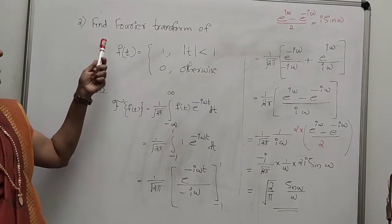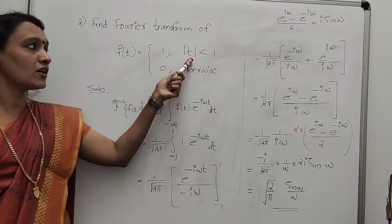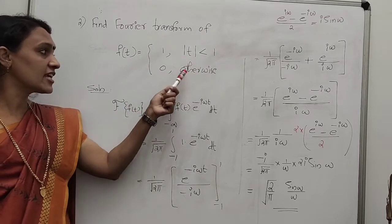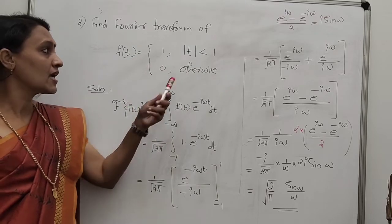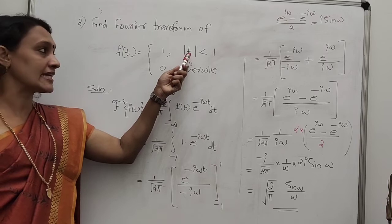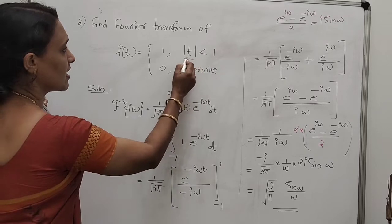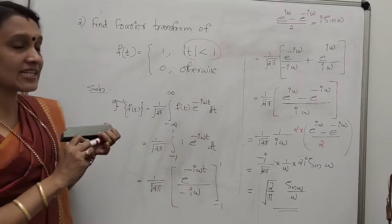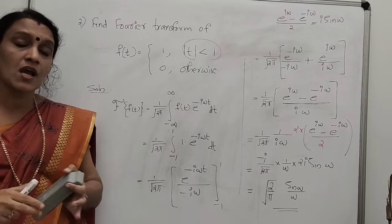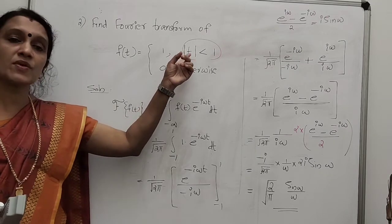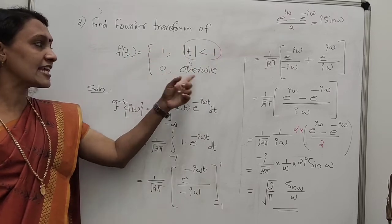Now the second question: find the Fourier transform of f(t) = 1 for |t| < 1, and 0 otherwise. Here f(t) is given in split form based on the value of t. |t| < 1 means t lies between -1 and +1. So f(t) = 1 for t in (-1, 1) and 0 otherwise.